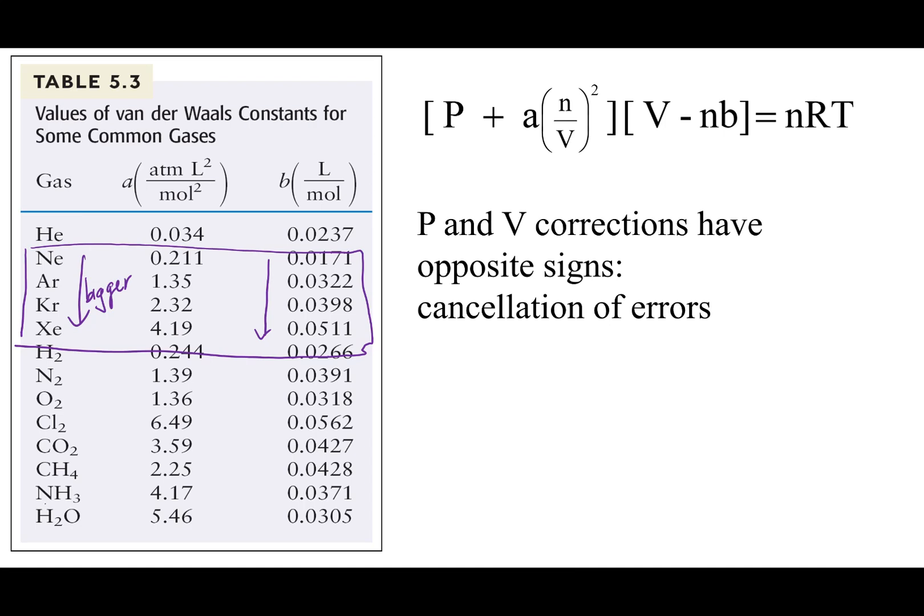And so if I have a multi-atom molecule like CH4, you can see that this and CO2 have rather big B terms. Now, we're not going to be discussing polarity in Chem 1A. The only polar molecule or molecule that acts like a bar magnet that I want you to know of is water.